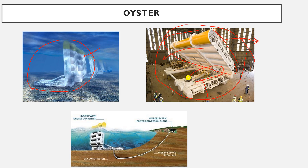Due to the motion of this rigid flap back and forth, the pistons produce compressed fresh water. This water is compressed and goes through a pipeline to a hydroelectric power conversion plant, or hydroelectric power station.